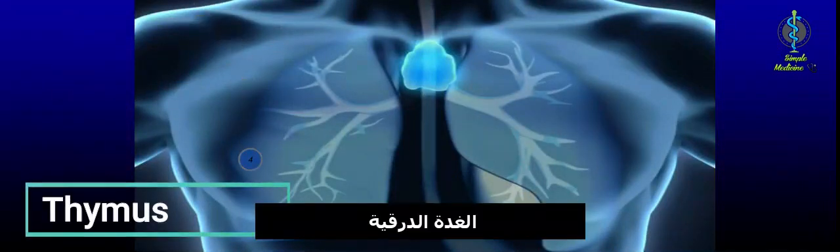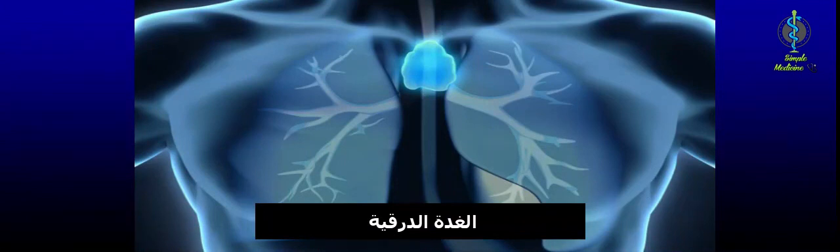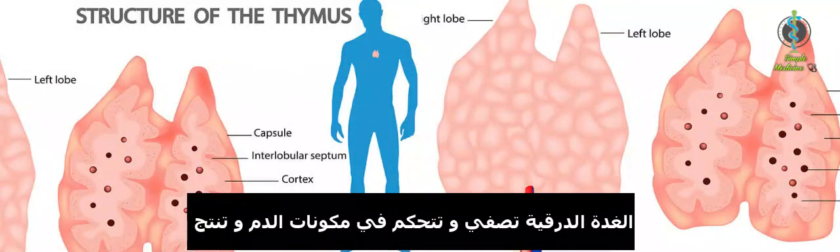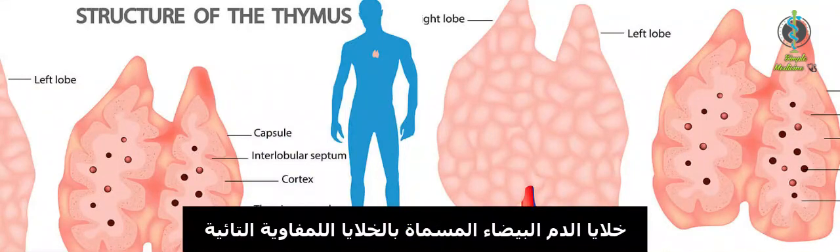Thymus. The thymus filters and monitors our blood contents. It produces white blood cells called T lymphocytes.